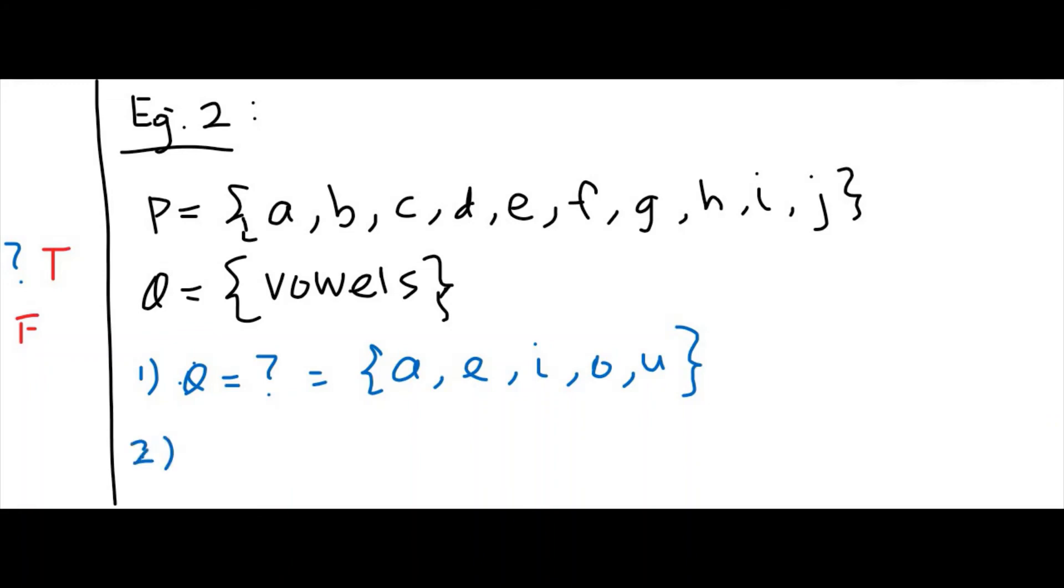Moving on to question two, we would like to know if Q is a subset of P. Let's look back at set Q. Set Q has a, P has a. Set Q has e, P has e. Set Q has i, P has i. But Q has o and u as well, and P does not have those. Therefore the answer is no, Q is not a subset of P.